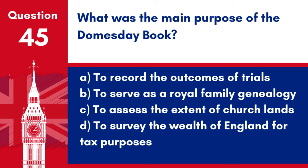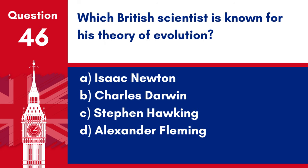Question 45. What was the main purpose of the Domesday Book? a. To record the outcomes of trials. b. To serve as a royal family genealogy. c. To assess the extent of church lands. d. To survey the wealth of England for tax purposes. Answer: d. The Domesday Book, commissioned by William the Conqueror in 1086, was a survey of landholding and resources in England for taxation.